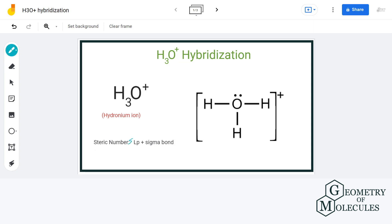Let us have a look at the Lewis structure of hydronium ion. You can clearly see that central atom oxygen has formed three sigma bonds with three hydrogen atoms and besides that, it also has one lone pair of electrons attached to it.